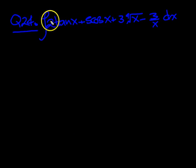OK guys, let's have a look at 24 then. We've got the integral of 2 tan x plus 5 lots of cos x plus 3 times the 4th root of x minus 3 over x dx.